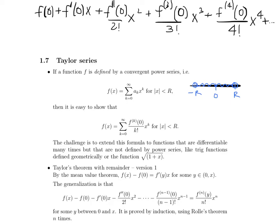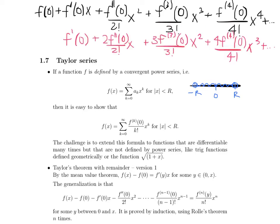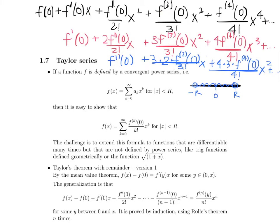Our power series has the same function value as this function f at 0. Then we take the first derivative of this power series and evaluate it at x equals 0. Now this term disappears, this term disappears, all these terms disappear because they're all being multiplied by x. So when we evaluate the entire series' first derivative at 0, we are left with the function's first derivative at 0. If we took the second derivative of this power series with respect to x, this term would go away, and every other term but the first goes to 0, leaving us with the function's second derivative at 0.